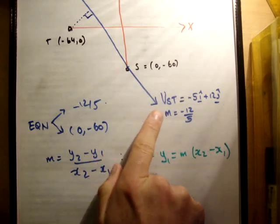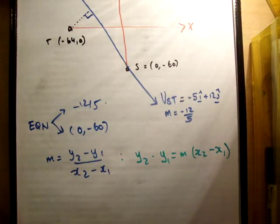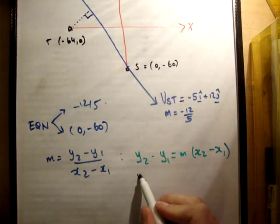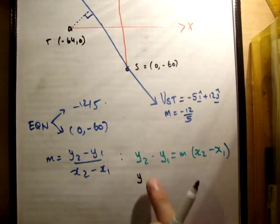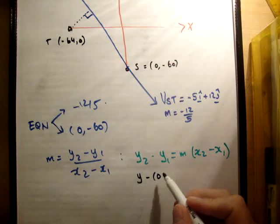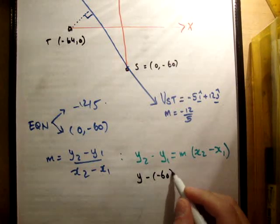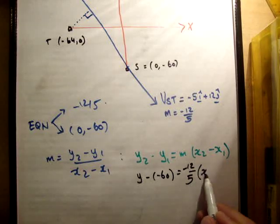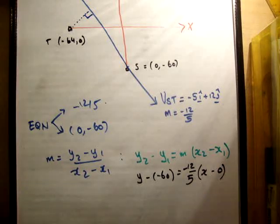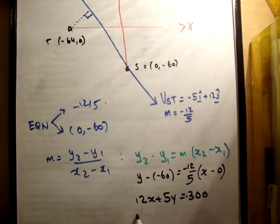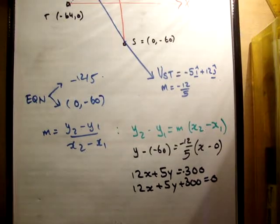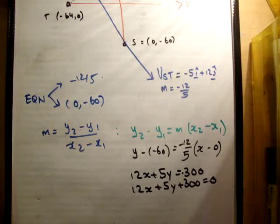So let's just get the equation of the line VST. We'll do this quite slowly. We get y minus (-60) is equal to -12/5 times (x - 0). And you'll get, as a result of that, just do a small bit of rearrangement, and you'll get 12x + 5y = -300. Or you could say 12x + 5y + 300 = 0. And that is the equation of this line. So that will tell you whether or not a point is on that line.